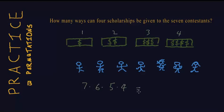So this would result in a total of 7 times 6 times 5 times 4, which is 42 times 20, is 840. So the scholarship office has 840 ways to give out their scholarships.